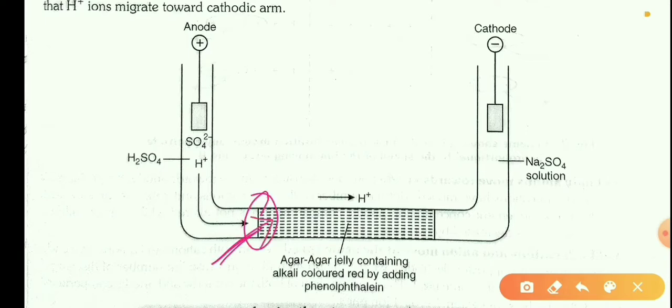And now what happens, a pink color band starts appearing from this side, from anodic arm. And this pink boundary moves from this anodic arm to the side of cathodic arm.